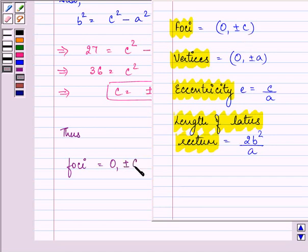which is found to be 6. Then, we have vertices, that is 0, plus minus a, and that is found out to be 3.